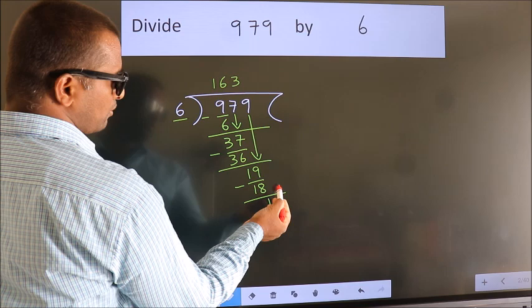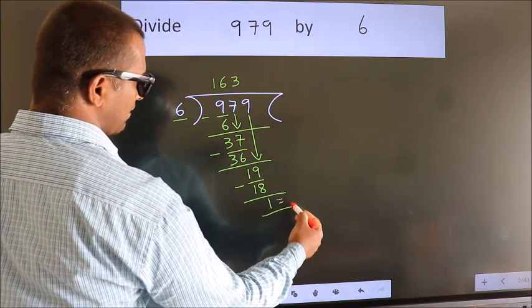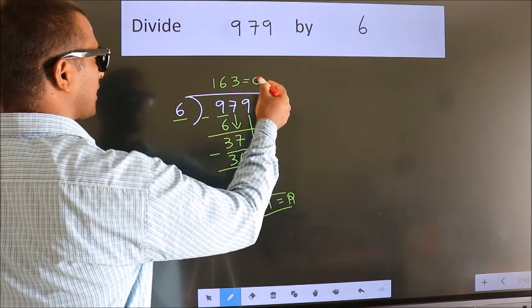No more numbers to bring down, so we stop here. This is our remainder, and this is our quotient.